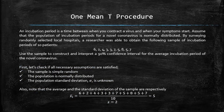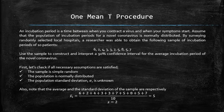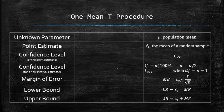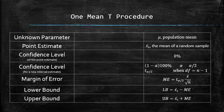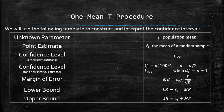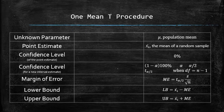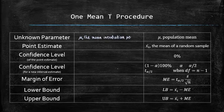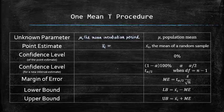Once the assumptions are verified, we may apply the procedure. We will use the following template to construct and interpret the confidence interval. The unknown parameter in this problem is mu, the mean incubation period. The point estimate is the sample mean, which is equal to 5.